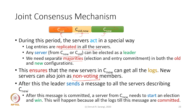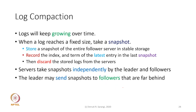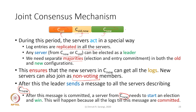After the leader sends a message with C-new and it is committed, a server from C-new is expected to start and win an election, because all logs up to that message are expected to be committed. The new configuration takes over and servers in C-old minus C-new — those not part of the new configuration — can be shut off.